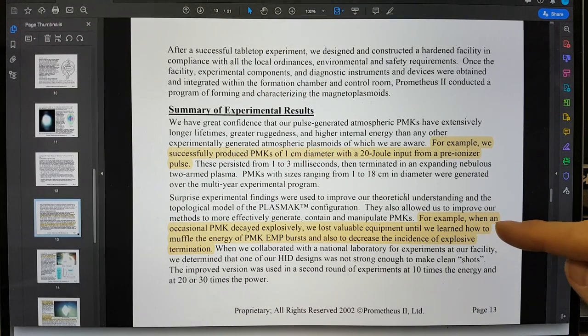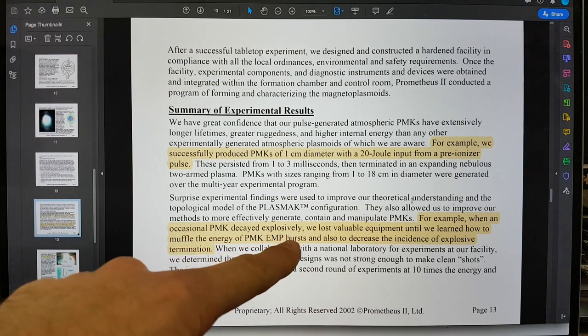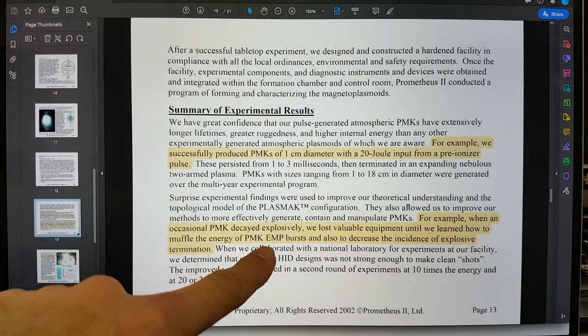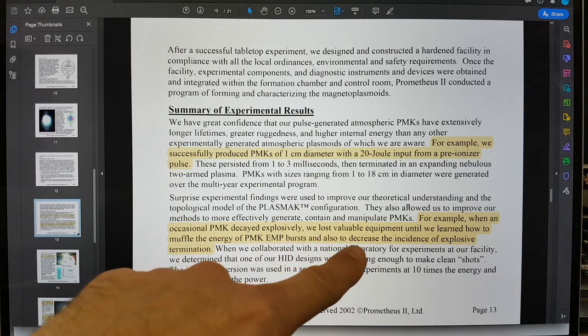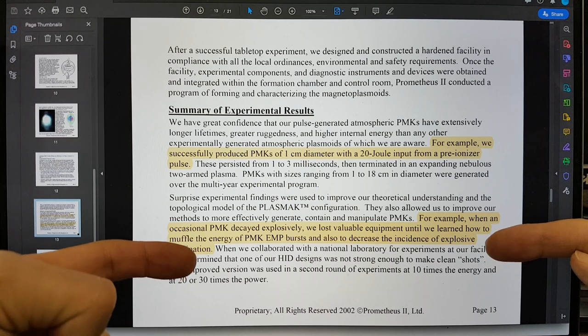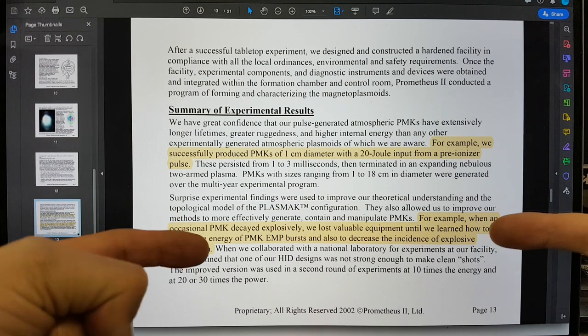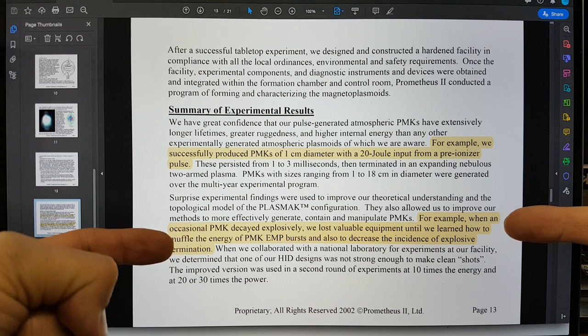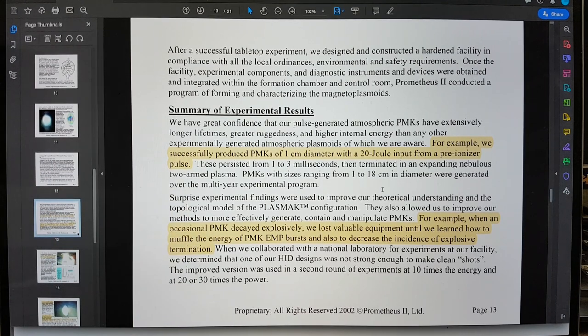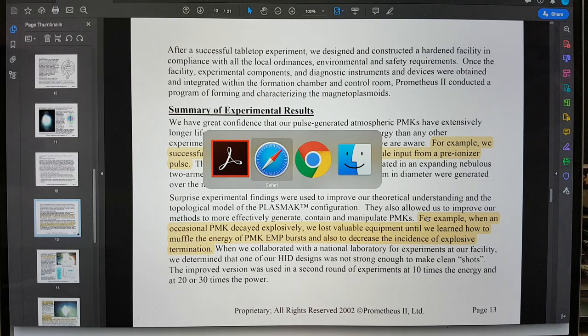I'm going to go to the paper because there's some things that are quite relevant in discussions right now. The first point here is, for example, when an occasional PMK decayed explosively we lost valuable equipment until we learned how to muffle the energy of the PMK electromagnetic pulse bursts and also to decrease the incidence of explosive termination. So you have to control them so that they don't blow up. Shoulders warned that these things can blow up and produce an EMP and you can maybe shield for it. Shishkin goes into the fact that they had learned also how to shield for these things if they should blow up.